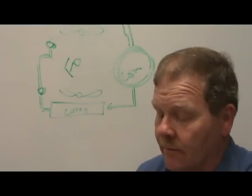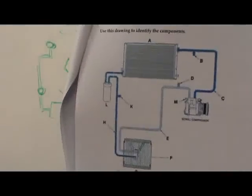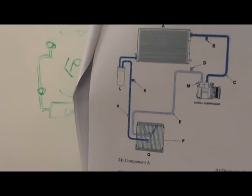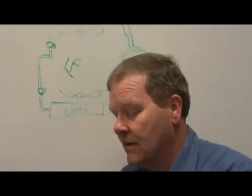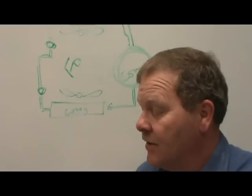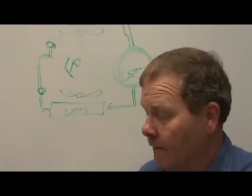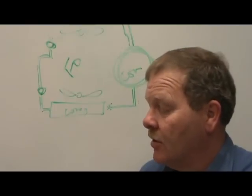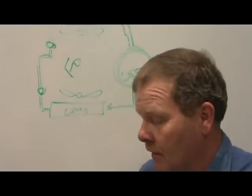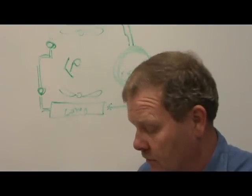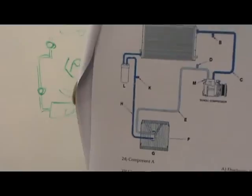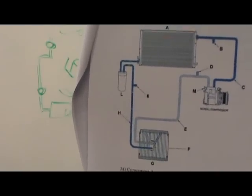Looking at the diagram: component A is the condenser. Component B is the low-side service port, and D is the high-side service port. Between the compressor and the condenser is the discharge line. C is also identified from the diagram.